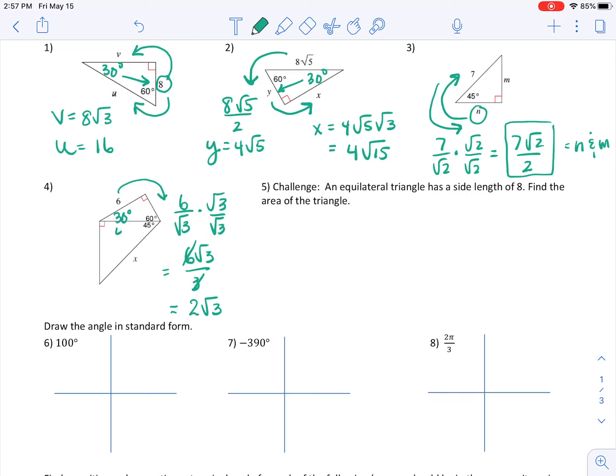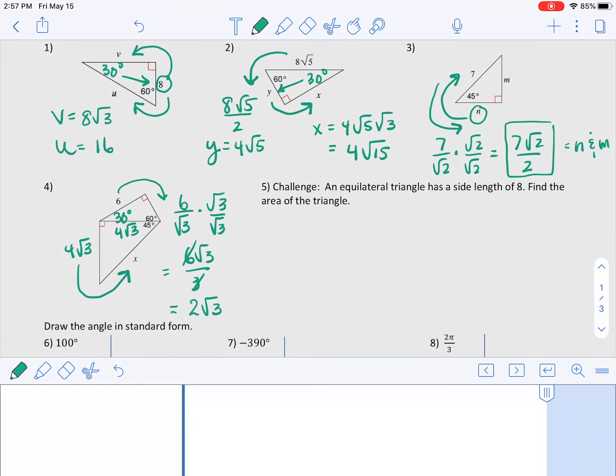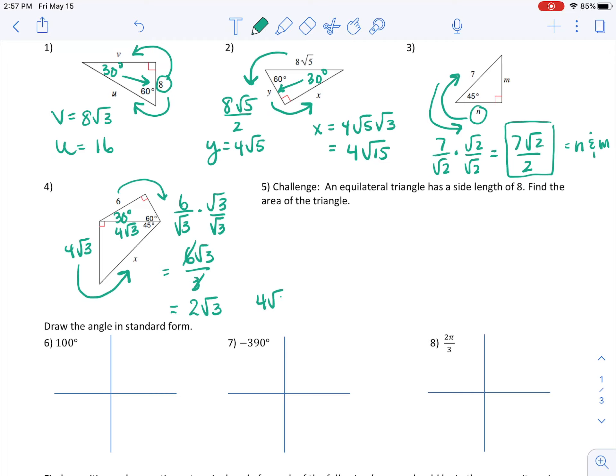That means the hypotenuse of that triangle would be twice as much, 4 root 3, which is also the other side of this 45-45-90, excuse me. And then that gets multiplied by root 2 to get the hypotenuse. So 4 root 3 times root 2 would be 4 root 6. So X is 4 root 6.